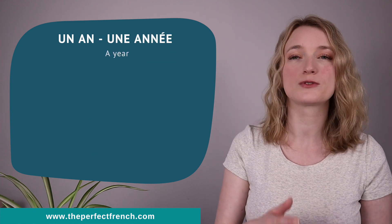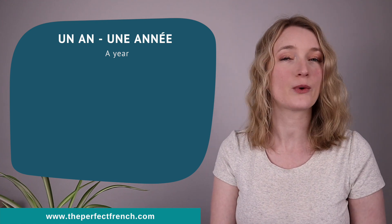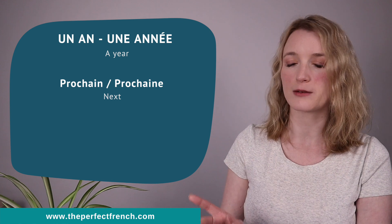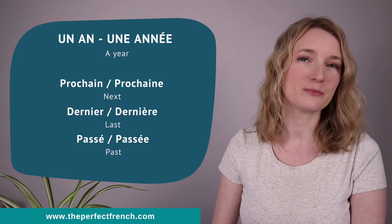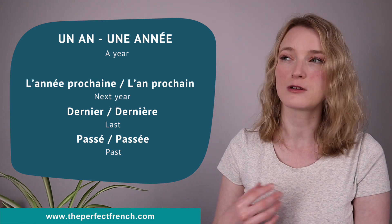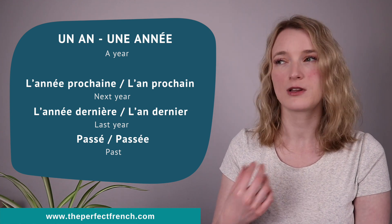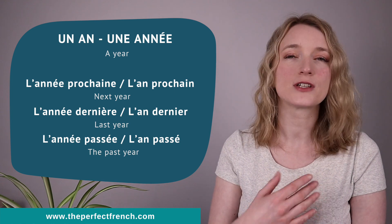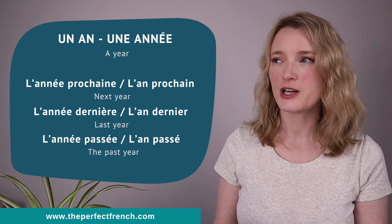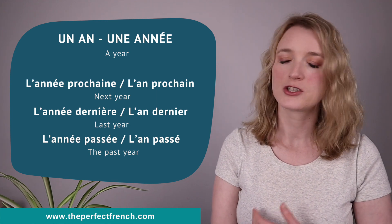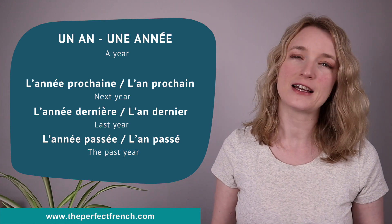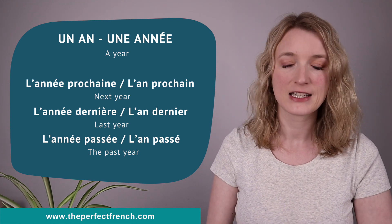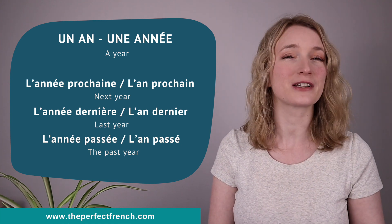There are a few cases where you can use both an and année — it's really up to you, there's no rule. This happens with the adjectives prochain/prochaine, dernier/dernière, and passé. So you can say l'année prochaine or l'an prochain; l'année dernière or l'an dernier; l'année passée or l'an passé. I usually advise my students to use année with those three to keep the rule with the adjective and avoid confusion. So remember: an is for quantity, année is for quality.